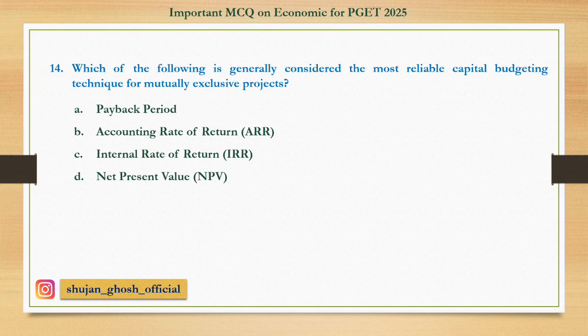Question number fourteen: Which of the following is generally considered the most reliable capital budgeting technique for mutually exclusive projects? Option A: payback period. B: accounting rate of return. C: internal rate of return. D: net present value. Answer: net present value.